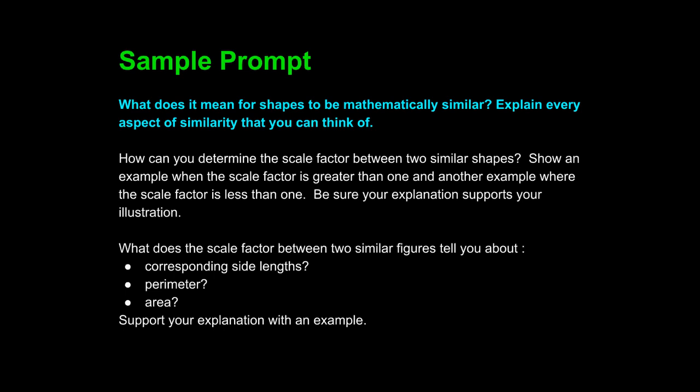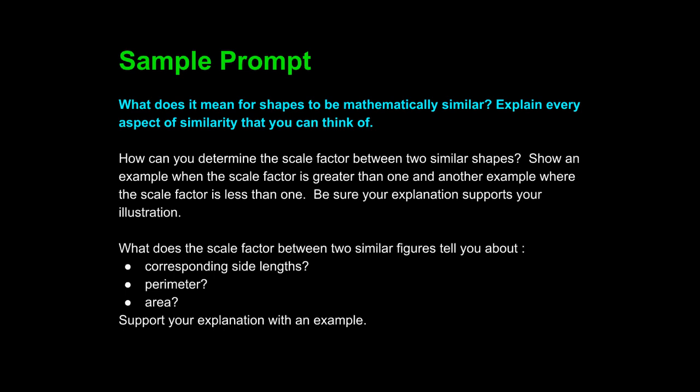Let's take a look at a student answer. That means that the two are similar mathematically. The two could have the same size, shape, same length, same area, and perimeter. You can find a scale factor by finding what number is used to multiply the first shape to get your second shape.